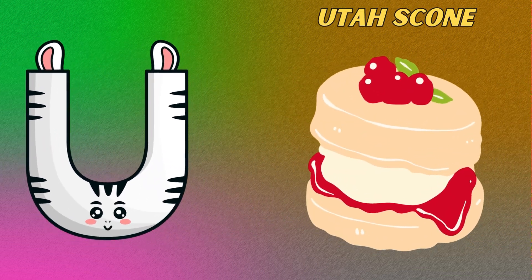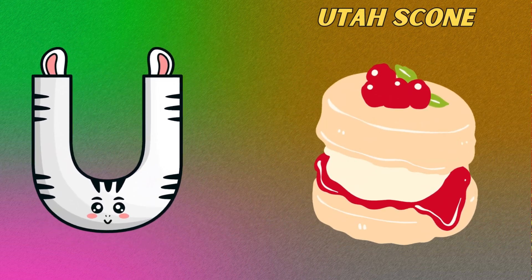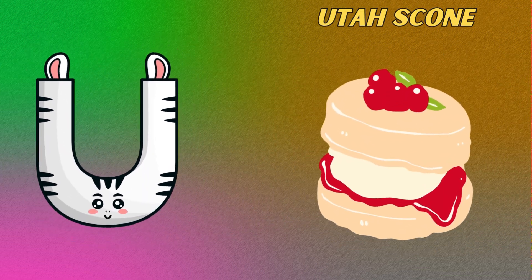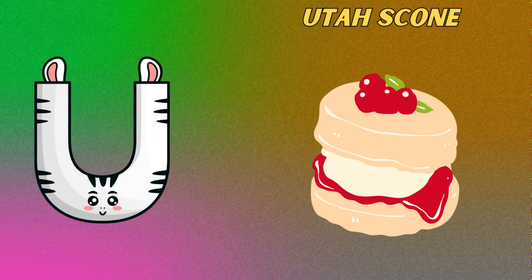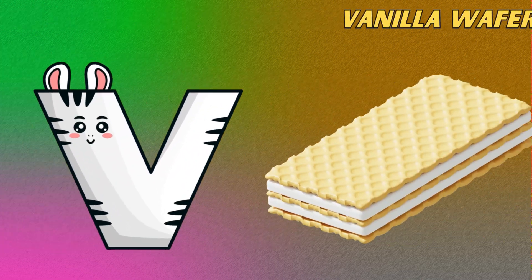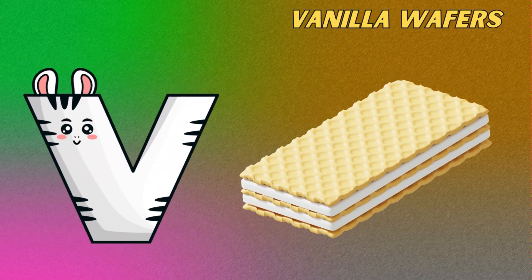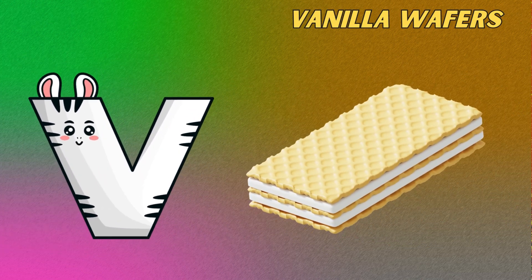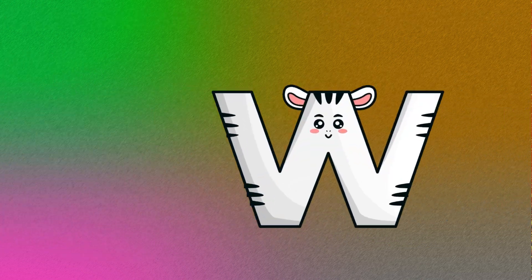U is for Utah Scone. V is for Vanilla Wafers.